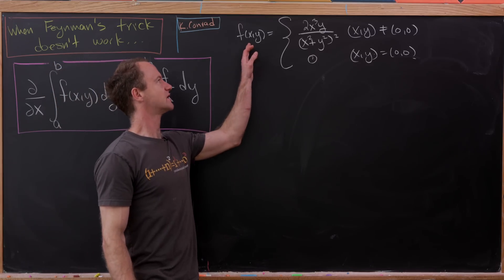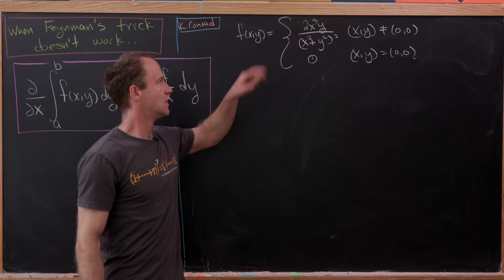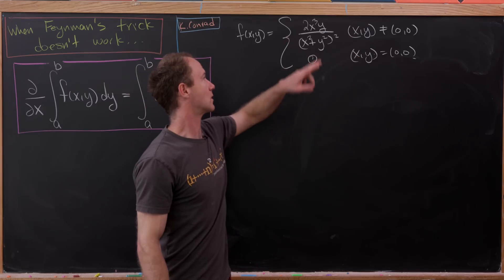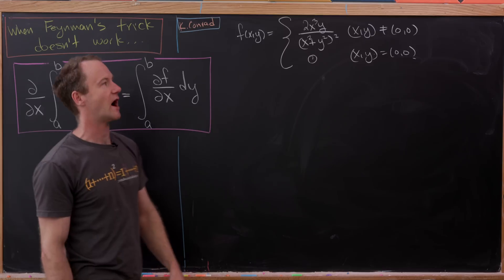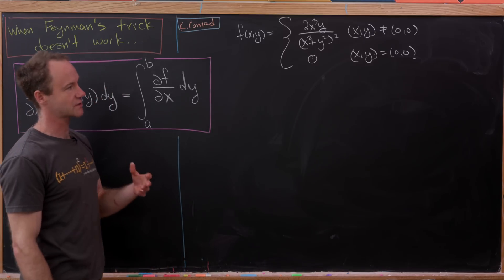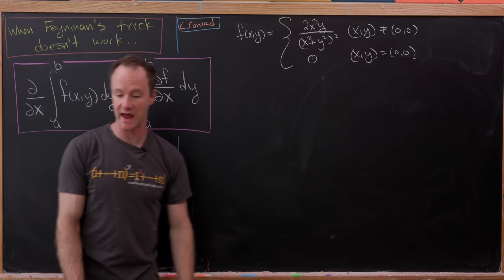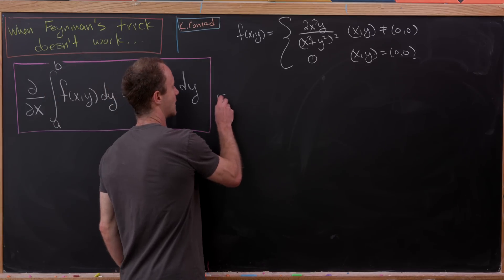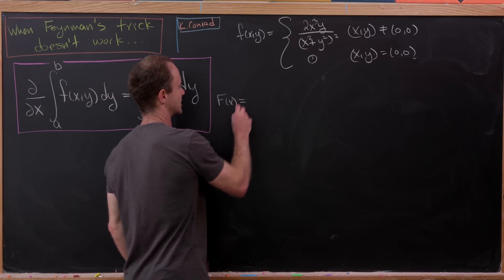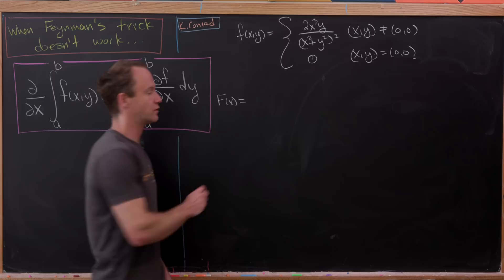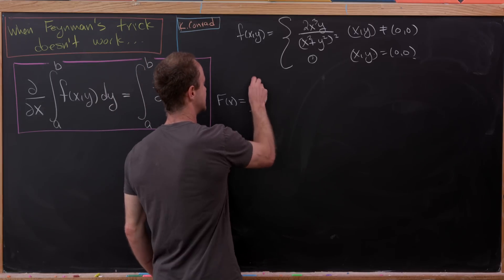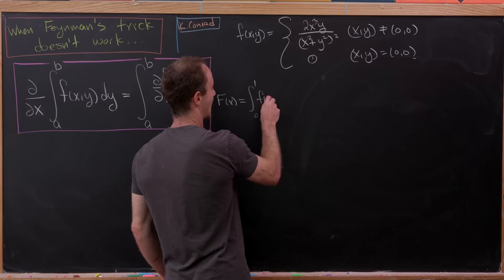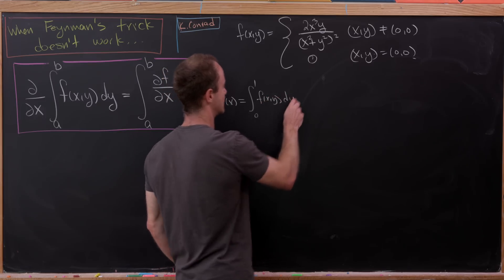So we're going to consider the function f of x, y, which when x, y is not the origin is 2x cubed y over x squared plus y squared all squared, and it's equal to zero when x, y is the origin. Now let's look at the following function, F of x, which will be the integral from zero to one of f of x, y dy.